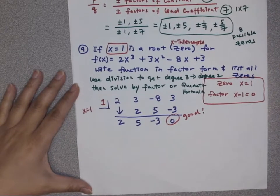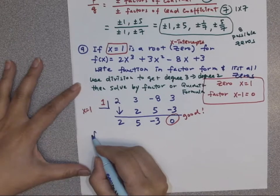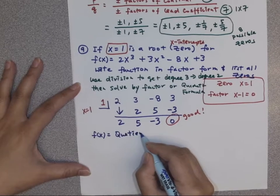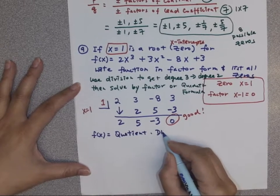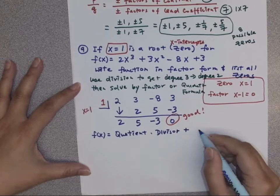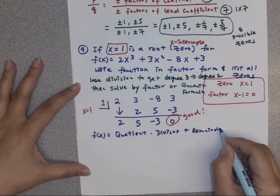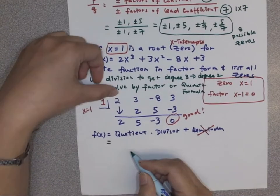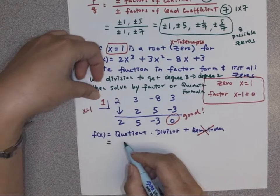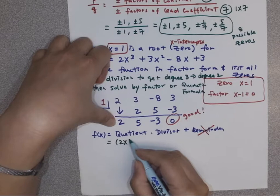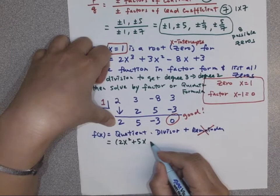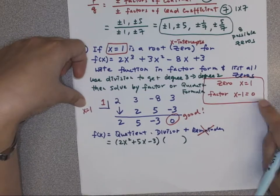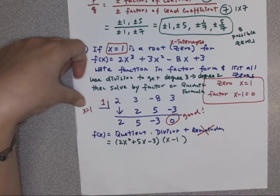So once we have that, we can write that as a function because the function will equal to quotient times the divisor plus the remainder, which we don't have a remainder. We can ignore that part. Which here, my quotient, I started with degree 3 divided by 1x. So it's going to be degree 2 here. 2x squared plus 5x minus 3. And my divisor, I know that factor, is supposed to be x minus 1.